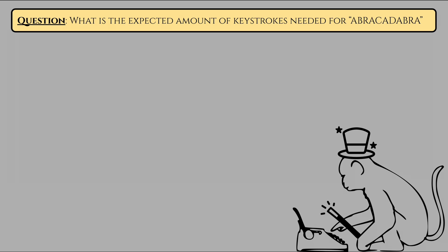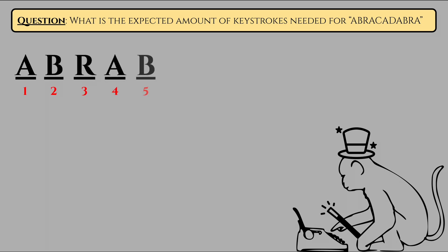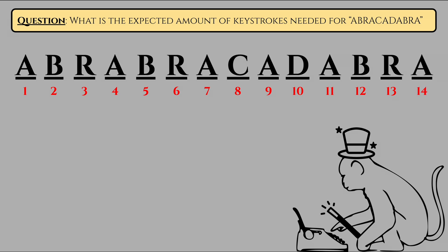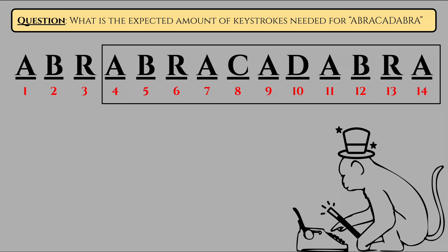Yet, something peculiar about the phrase abracadabra is the concept of durable progress. Suppose our monkey is typing away and gets really lucky, typing out A, B, R, A, B, R, A, C, A, D, A, B, R, A. We can immediately notice that even though the fifth letter wasn't a C — which would have been the fastest way to type abracadabra — it wasn't like our progress was completely reset. We just reused the A from the fourth letter position. In addition, if we kept going, we'd only need in theory a minimum of seven more slots to finish the word, rather than the full 11, since the last four characters already formed the prefix 'abra'.